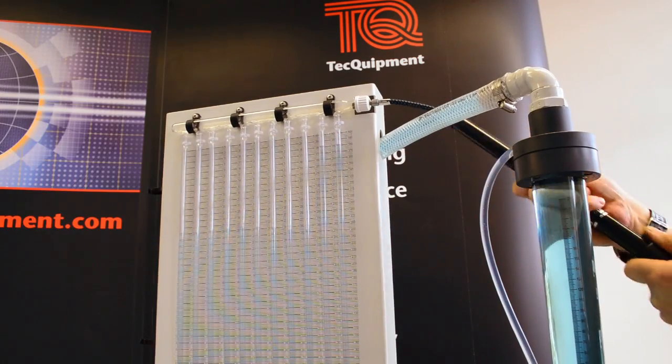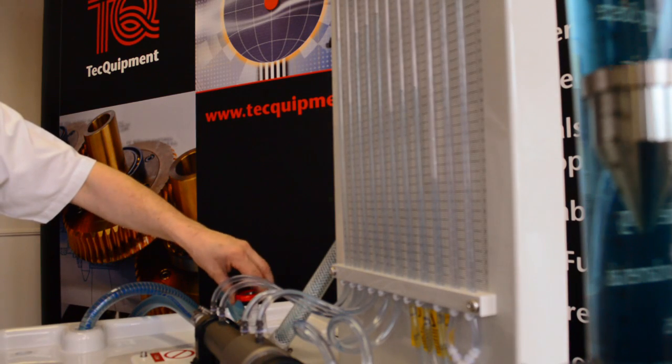The valves keep the air in the manometer tubes to allow you to offset the pressure range of the tubes.